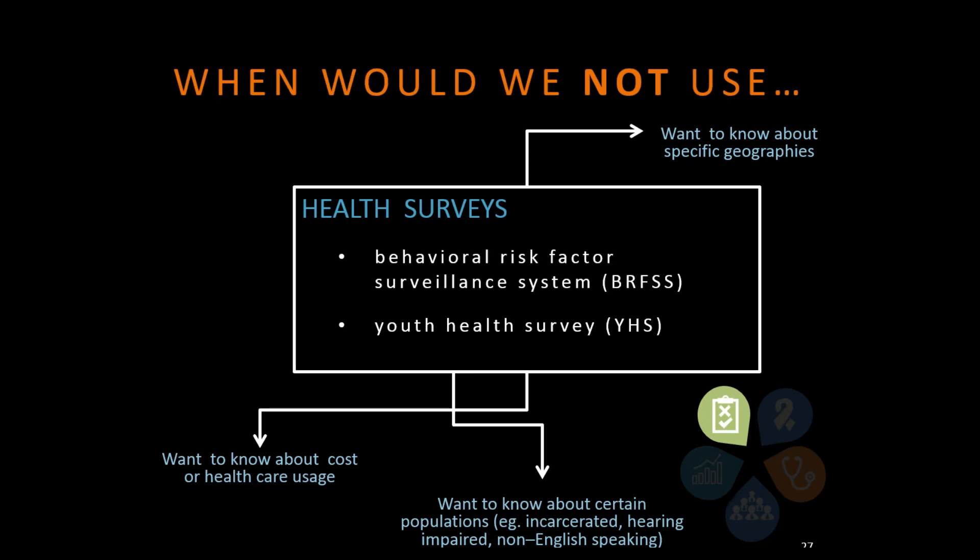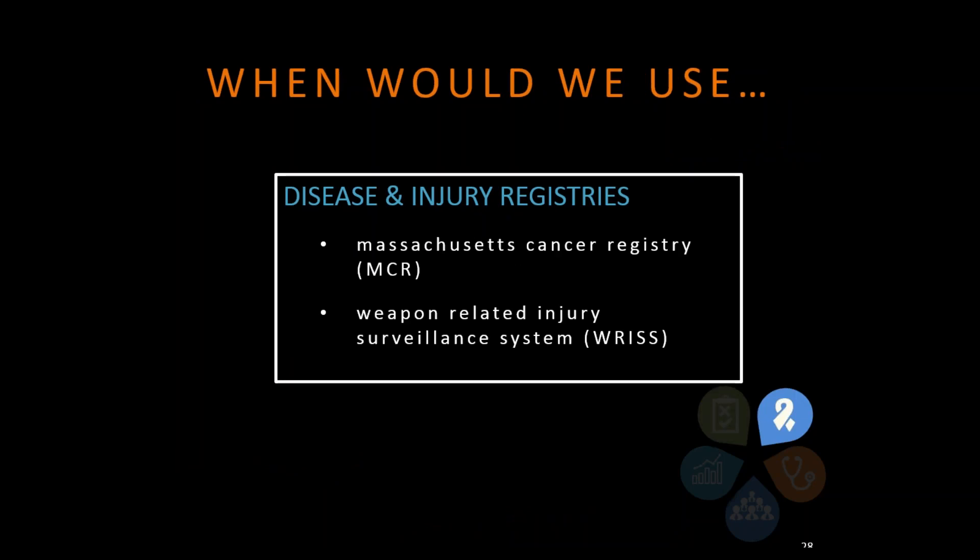The BRFSS and other health surveys are really designed to be representative at a state level, and they're pretty effective at a county level as well. That's just a smattering of how we would apply those three data qualities from part one to make critical decisions about which health survey data sets to use when crafting narratives for certain audiences.